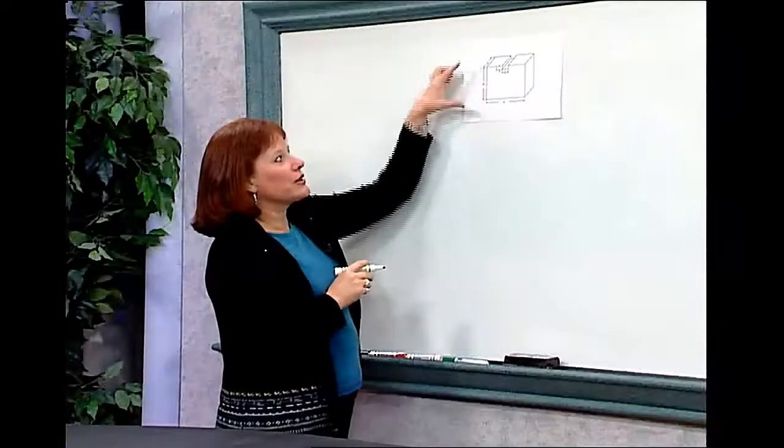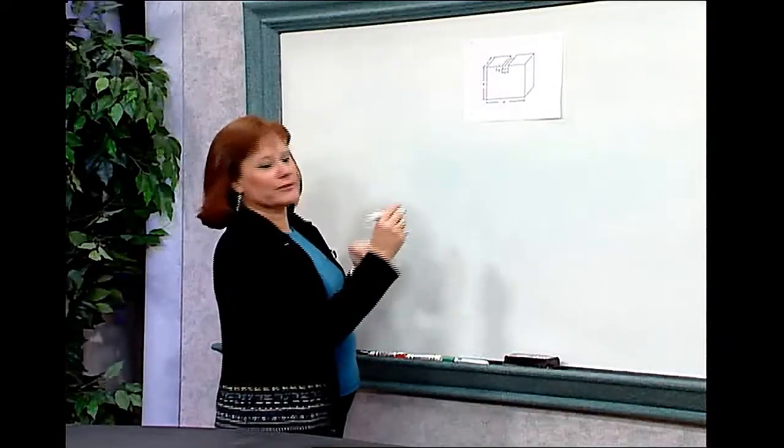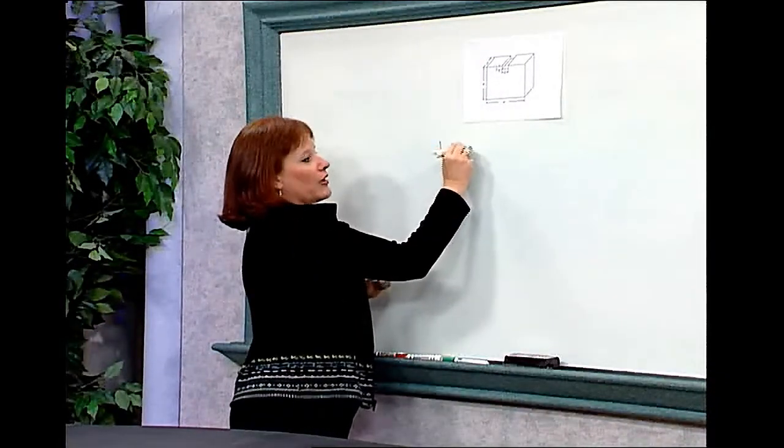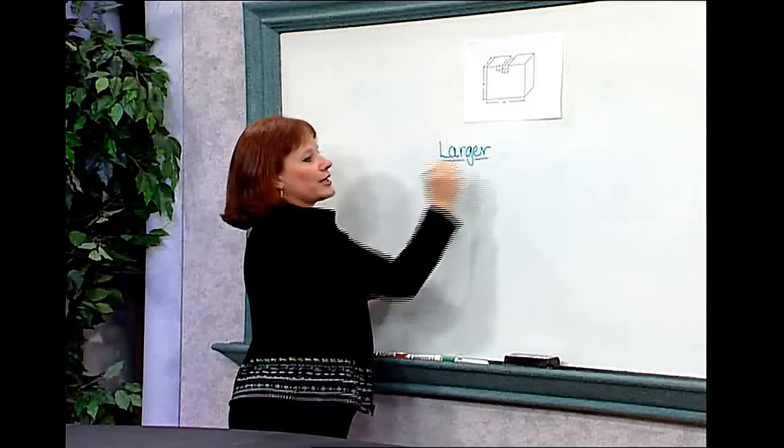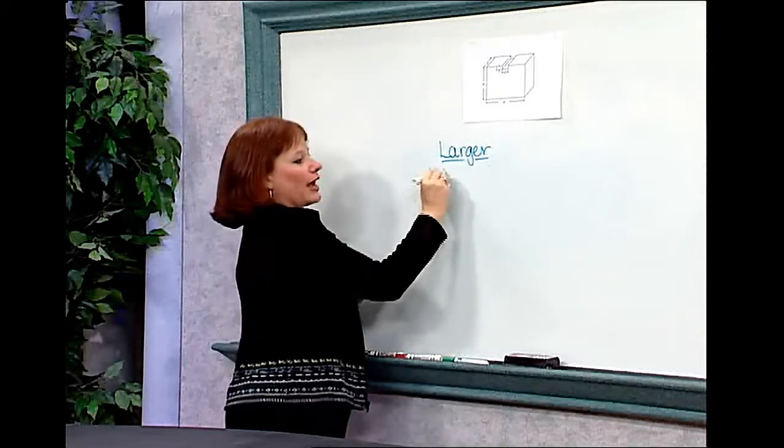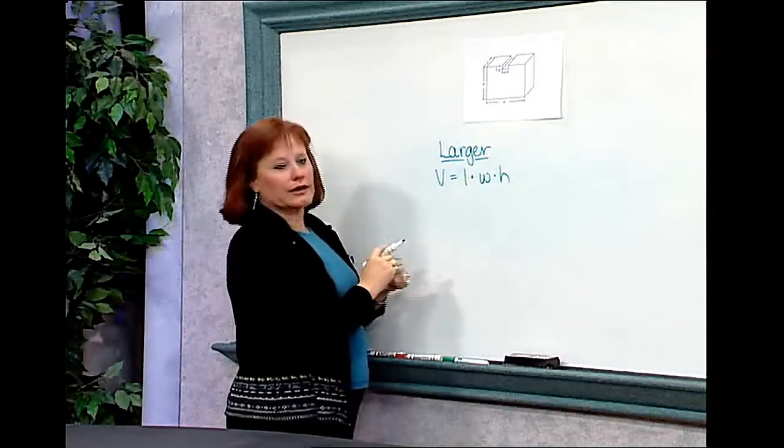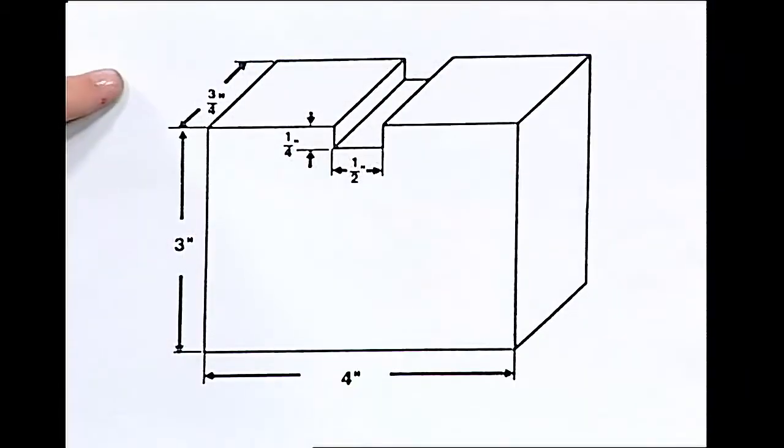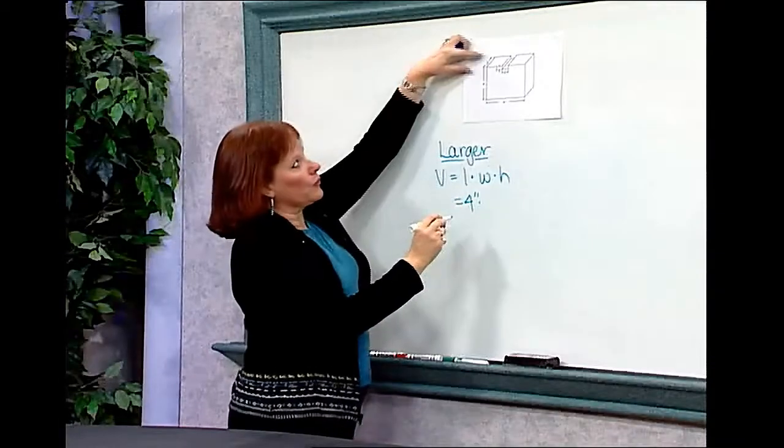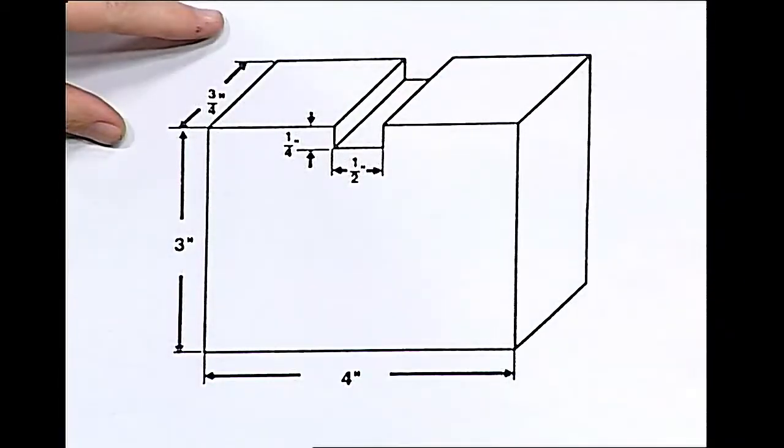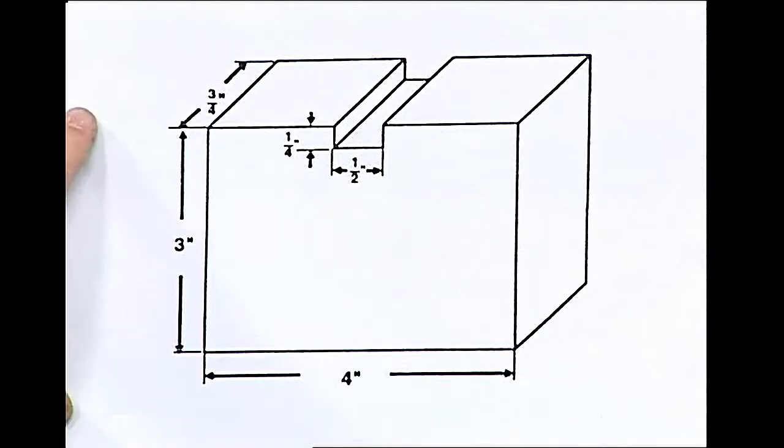My strategy requires finding the volume of the larger prism first. In order to find the volume of the larger prism, I'm going to use what I know about rectangular prisms. I know the volume of a prism is length times width times height. If I look at my figures, the dimensions are printed here. The length is 4 inches, the width is 3/4 of an inch, and the height is 3 inches.